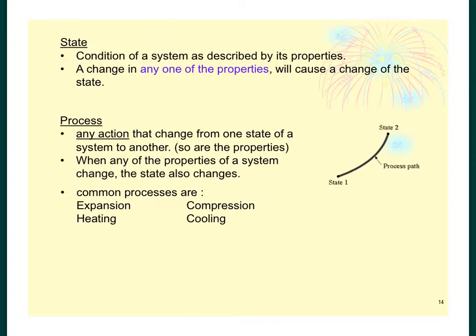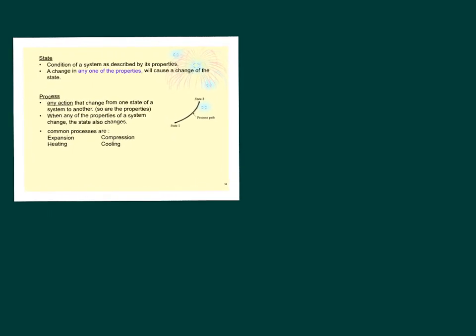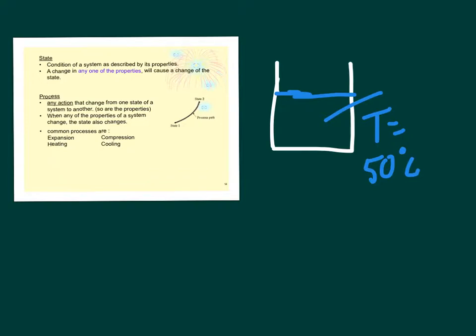So now imagine that we have a glass of water, and it is filled up with water at a temperature of let's say 50 degrees C. And then after some time, this water with the same mass, but the temperature has changed equilibrium with the surroundings. Let's say your room temperature is about 30 degrees C. So now, this is what it meant by state.